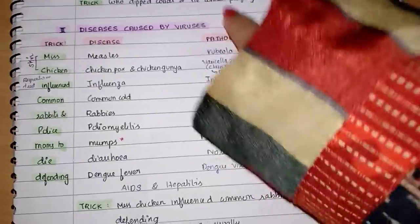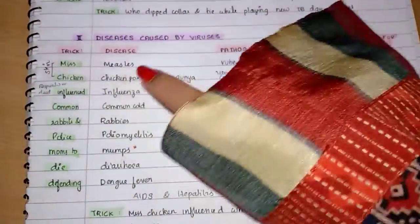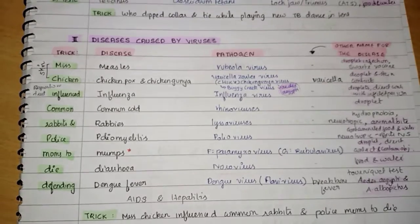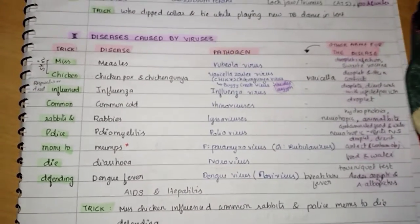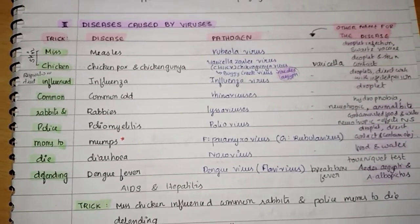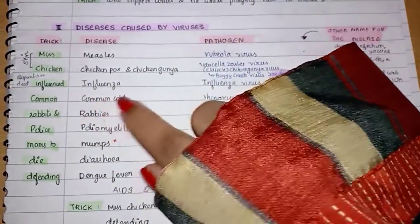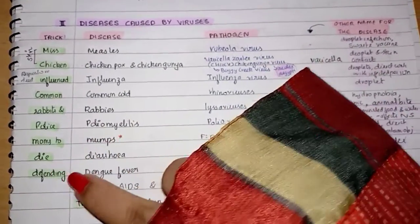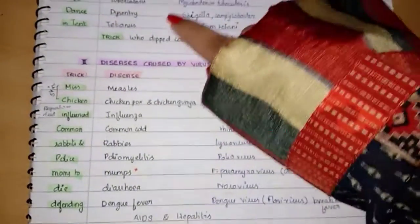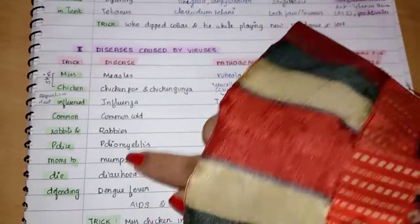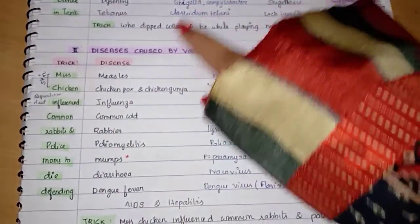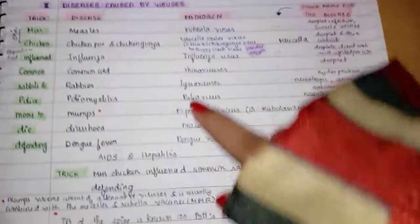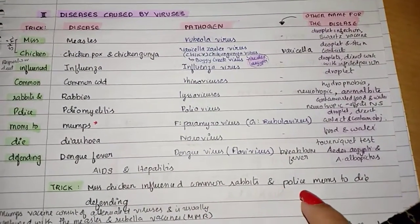Next, diseases caused by virus. The short trick is: 'Miss chicken influenced common rabbits and police moms to die defending.' Miss for measles, chicken for chicken pox, influenced for influenza, common for common cold, rabbits for rabies, police for poliomyelitis, moms for mumps, die for diarrhea, and defending for dengue fever. Note: if the question says dysentery, choose bacterial disease.